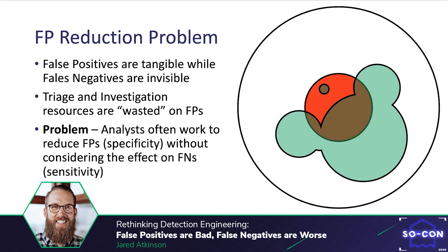We've now arrived at the concept of false positive reduction. Remember that false positives are tangible and apparent while false negatives are invisible, which can lead analysts to conclude that the biggest problem they face is related to false positives. In my experience consulting with detection engineering and SOC monitoring, I've observed the tendency to view false positives as a net negative. In some cases that's true, but in others they can be the result of an increase in detection sensitivity. As a result, the tendency is to tune detections — which in practice typically means reduce false positives. I want you to be aware of the specter of false negatives constantly looming over your detection engineering efforts. When tuning a detection, ask yourself: in my effort to reduce false positives or increase specificity, am I accidentally introducing opportunities for false negatives to thrive? Think about how you can maintain sensitivity while increasing specificity.